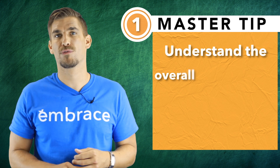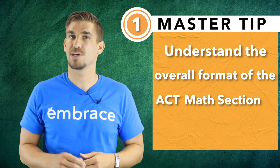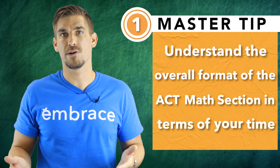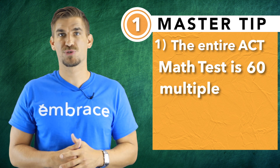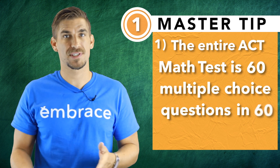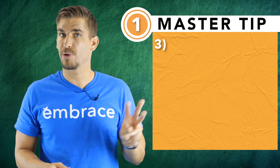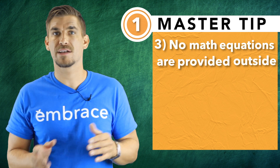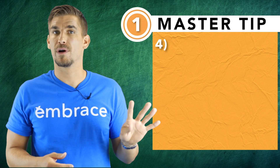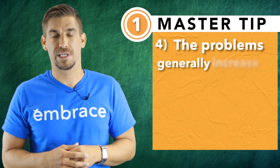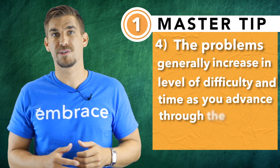Master Tip number one is understand the overall format of the ACT math section in terms of your time. A few immediate need-to-knows: one, the entire ACT math test is 60 multiple-choice questions in 60 minutes; two, you are permitted to use a calculator; three, no math equations are provided outside of the figures and information within the problems; and four, the problems generally increase in level of difficulty and time as you advance through the test.